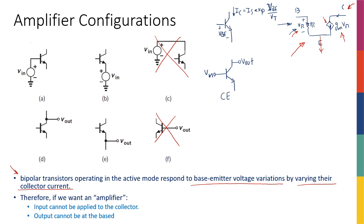In the common emitter configuration, vin is at the base and vout is taken from the collector. The second configuration also connects vin to the base, but vout is taken from the emitter instead. The collector is then the only terminal not connected to either vin or vout. This configuration is called common collector.